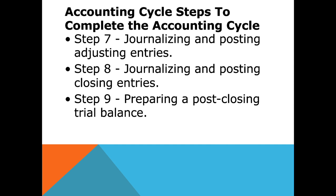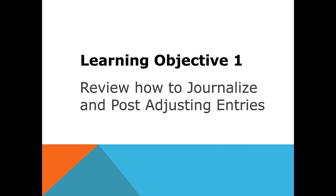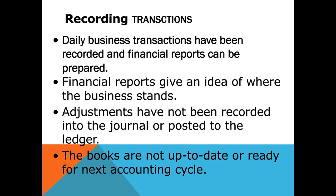Step nine is preparing the post-closing trial balance. Just as a recap on adjusting entries: daily business transactions have been recorded and financial reports have been prepared. We inputted all our adjustments, and the final reports will give an idea of where the business stands. At this point, adjustments have been recorded into the journal and posted, and the books will now be up to date and ready for the next accounting cycle — meaning the next fiscal year.